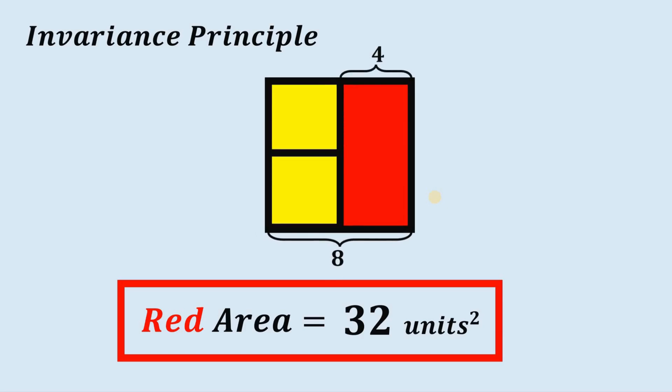Like this, so in this configuration, the red area is simply half the area of the square with a side length of 8. So 8 squared is 64 divided by 2, you get 32 square units. And that is our answer to this question.